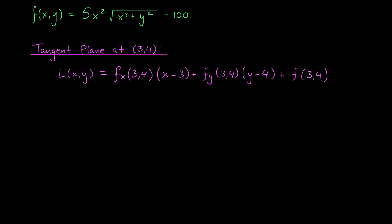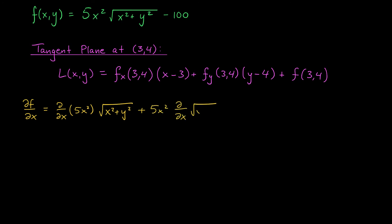Here is our formula for F(X, Y) and the equation of our tangent plane at the point (3, 4). To find that equation, we're going to need the partial derivatives with respect to X and with respect to Y. Let's start by differentiating with respect to X — we're going to need the product rule, since we have X's in both terms. The partial derivative ∂F/∂X is given by the derivative of the first term, ∂/∂X of 5X², times the second term, √(X²+Y²), plus the first term, 5X², times the derivative of the second term, ∂/∂X of √(X²+Y²). The minus 100 is just a constant, so it disappears under our derivative.